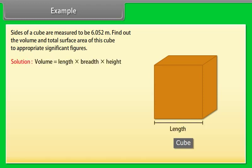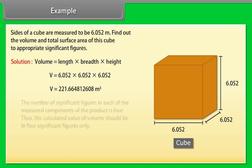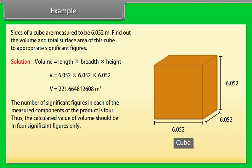Volume is equal to length into breadth into height. After calculation we get V is equal to 221.665 meter cube. The number of significant figures in each of the measured components of the product is 4. Thus the calculated value of volume should be in 4 significant figures only.